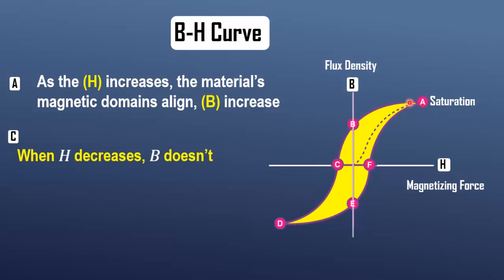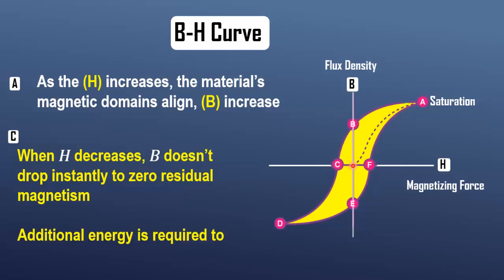When magnetic field intensity decreases, flux density doesn't drop instantly to zero. This is because some domains remain aligned, creating remanence, or residual magnetism.